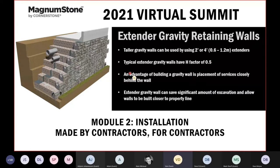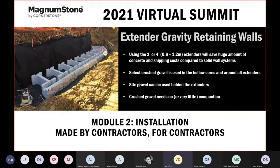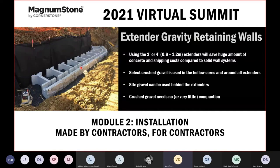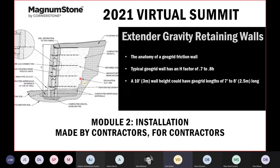Typically for an extender gravity wall, we are at approximately 0.5h to the height of the wall, giving much more ability to get closer to the property line. Even with extenders attached, you can do nice tight curves. Filter fabrics can be used vertically behind the units to protect fines from migrating into the chimney below.